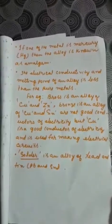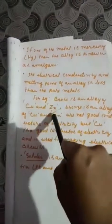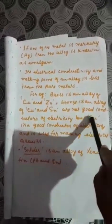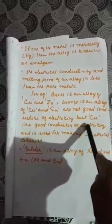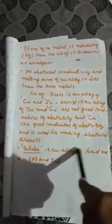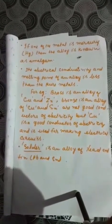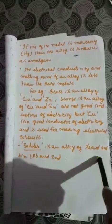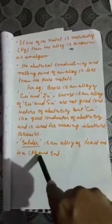The electrical conductivity and melting point of an alloy is less than that of the pure metal. For example, brass is an alloy of copper and zinc, and bronze is an alloy of copper and tin — these are not good conductors of electricity, whereas copper itself is a good conductor used for electrical circuits. Solder is an alloy of lead and tin. Remember these symbols and compositions.